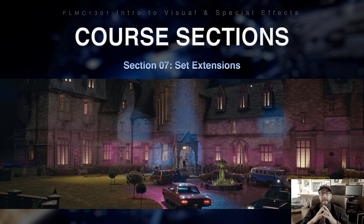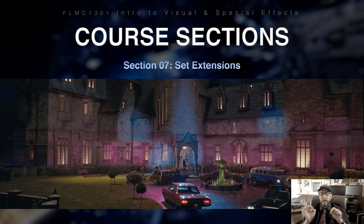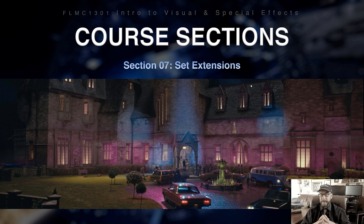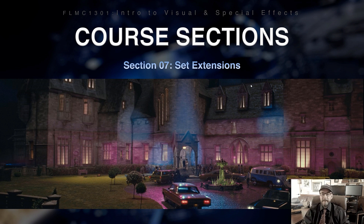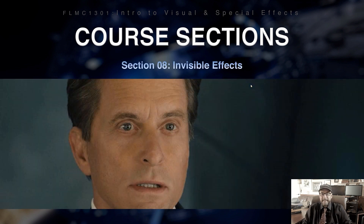Section seven covers set extensions, which is pretty close to matte paintings but is the new digital version. It allows the camera to do anything it wants. Before, when matte paintings were literally paintings, the camera was very limited — move it too much and the painting falls apart, looks like an illusion. Set extensions break that mold. That shot is from Tim Burton's Dark Shadows with Johnny Depp, and there's a set extension right in that shot.